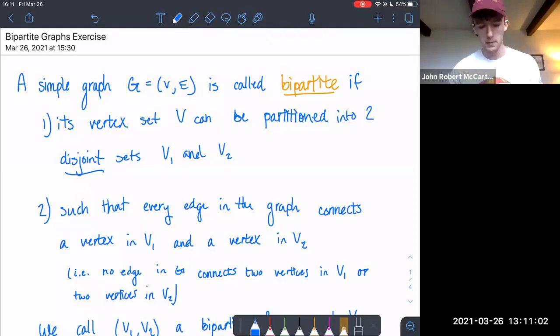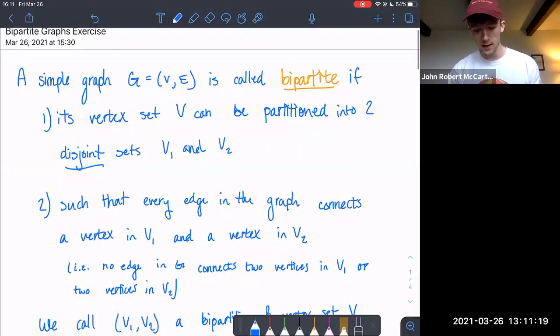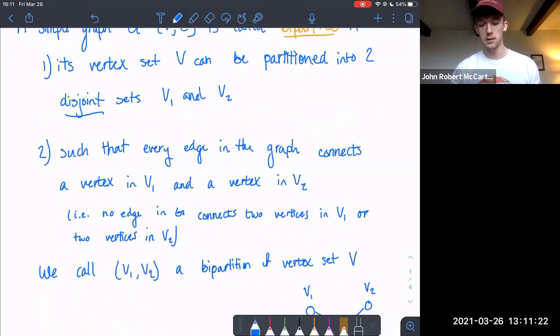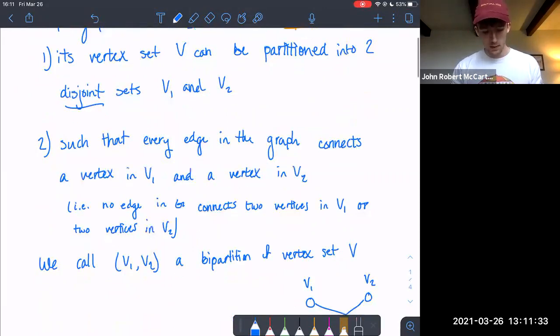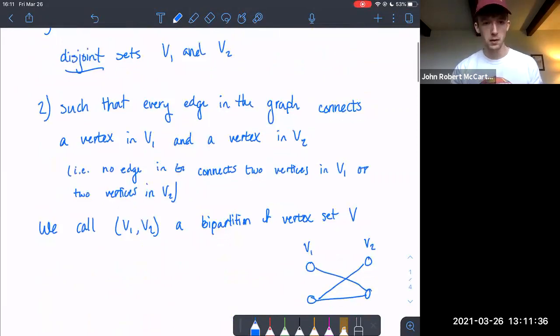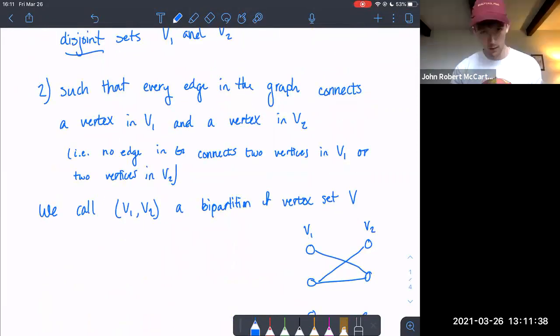So just as a reminder, a simple graph G with a vertex set V and edge set E is called bipartite if its vertex set V can be partitioned into two disjoint sets V1 and V2 such that every edge in the graph connects a vertex in V1 and a vertex in V2. In other words, no edge in G connects two vertices in V1 or two vertices in V2. So if a graph has this property, we call these two sets that partition V a bipartition of the vertex set V.